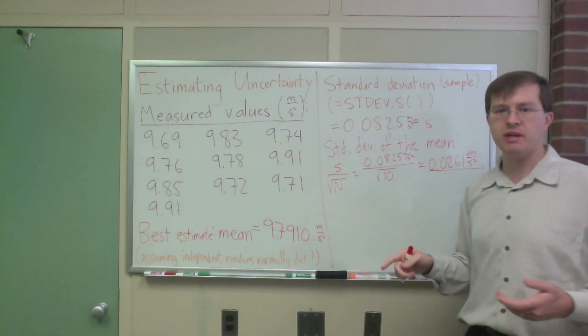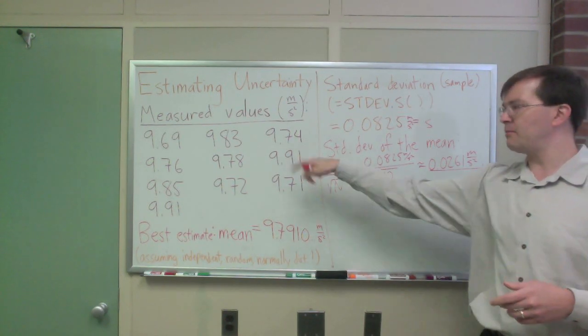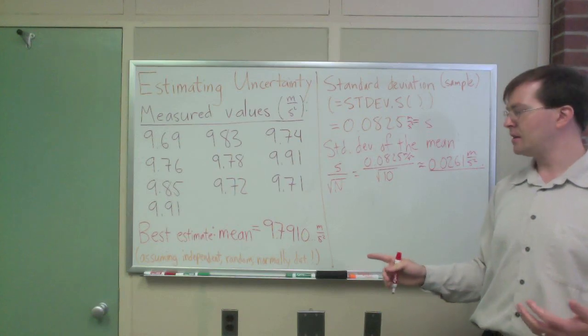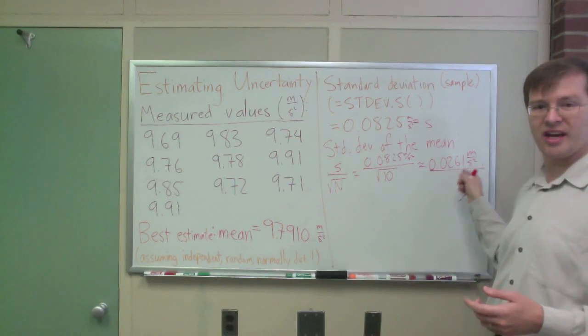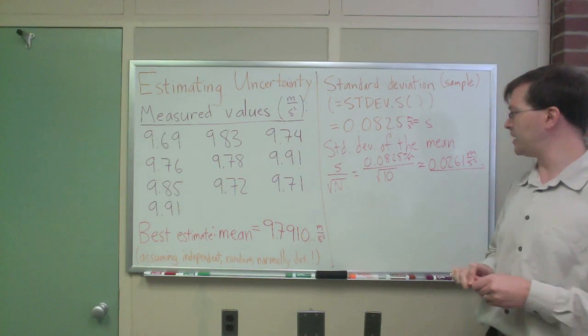That is my uncertainty in my mean. The standard deviation of the mean is my uncertainty in my mean value. If I were to do this same measurement a bunch of times, the mean would have a standard deviation of this much, in principle. That's my best estimate, at least, for the standard deviation of the mean.